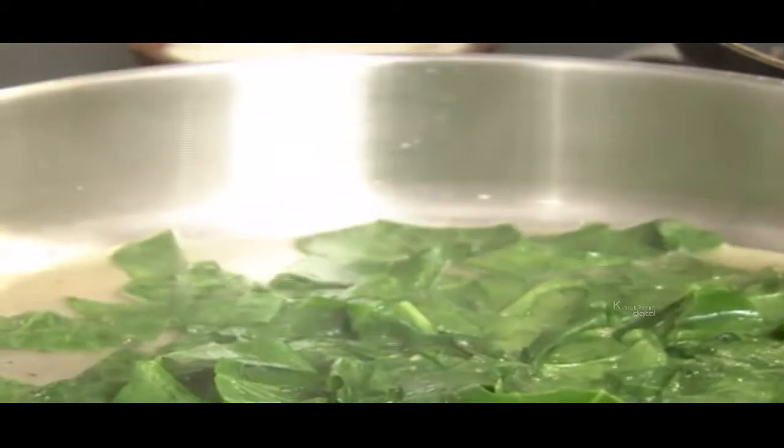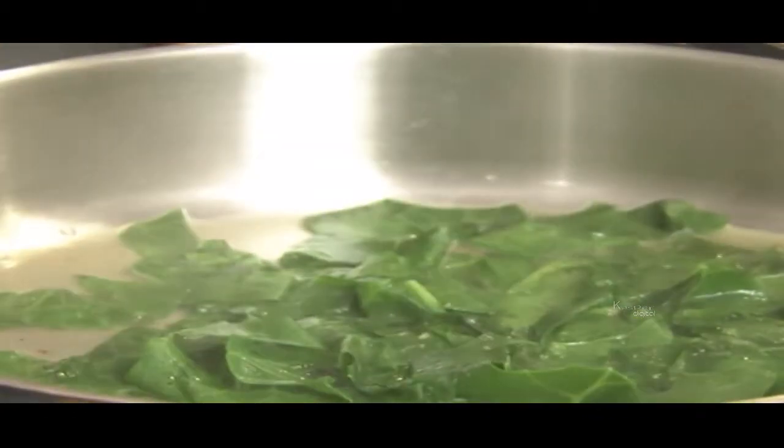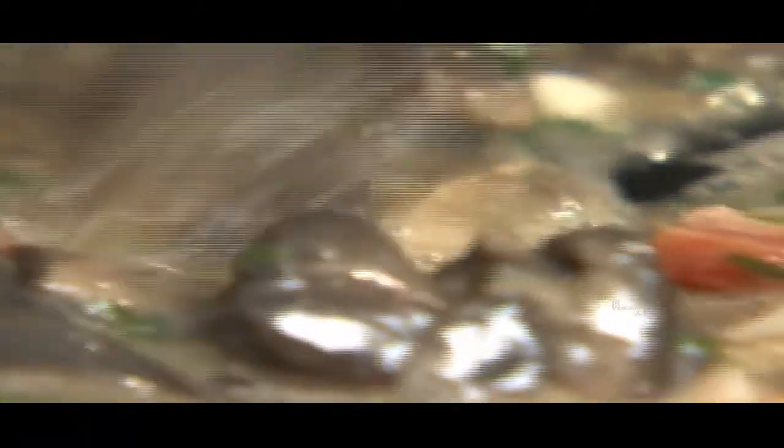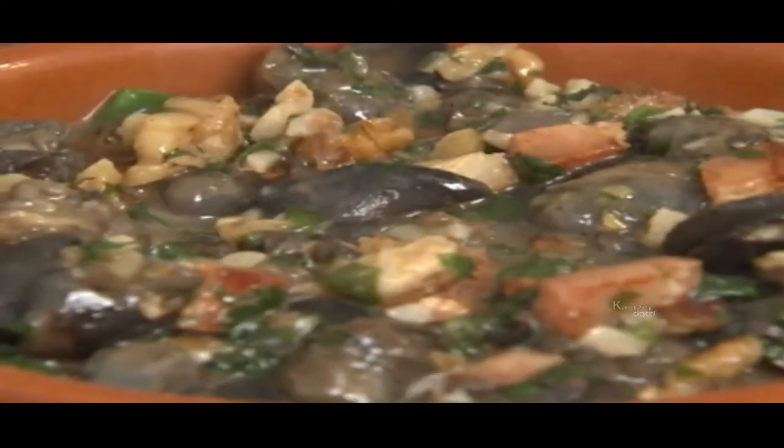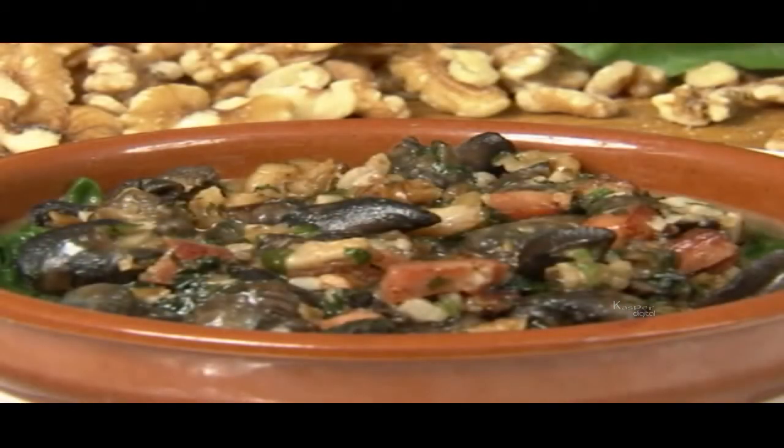Now your escargot on a bed of spinach should be ready to serve. Place the snails back on the heat just to bring up the temperature. Then plate up the spinach. Pour some of the butter from the spinach pan onto the escargot and give it a quick mix before serving on the spinach bed. Sprinkle on some fresh parsley and there you have a delicious, famous French favorite, escargot. Bon appetit!